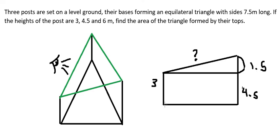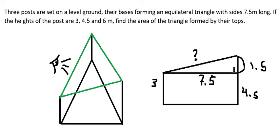We know that this horizontal value here is about seven-point-five. We put four-point-five minus three and we have one-point-five. We need to consider triangle ABC.